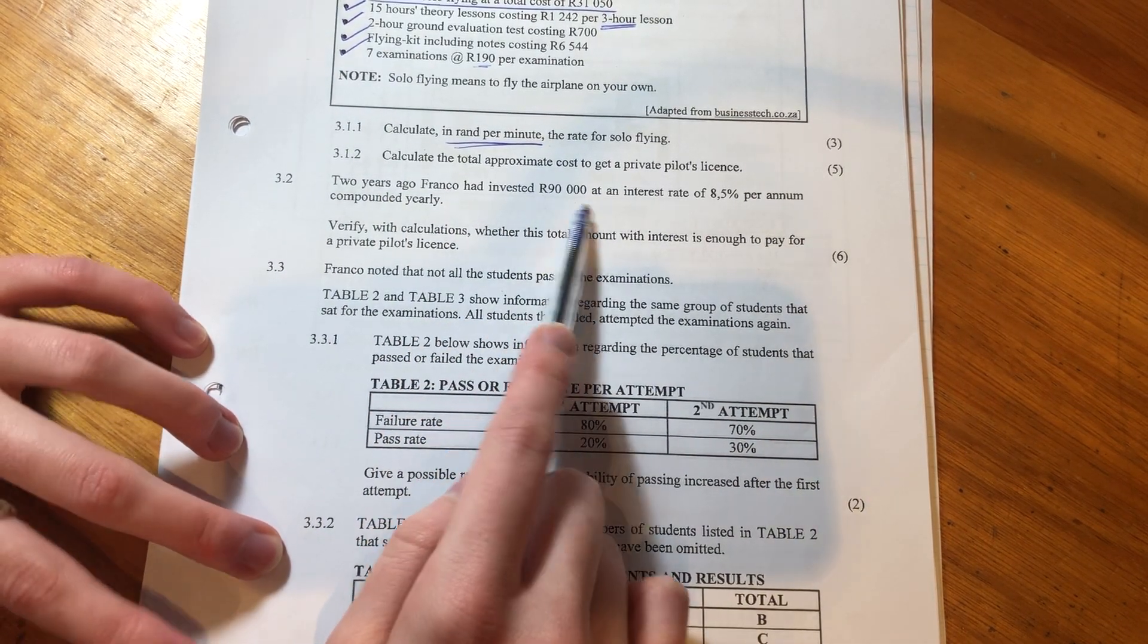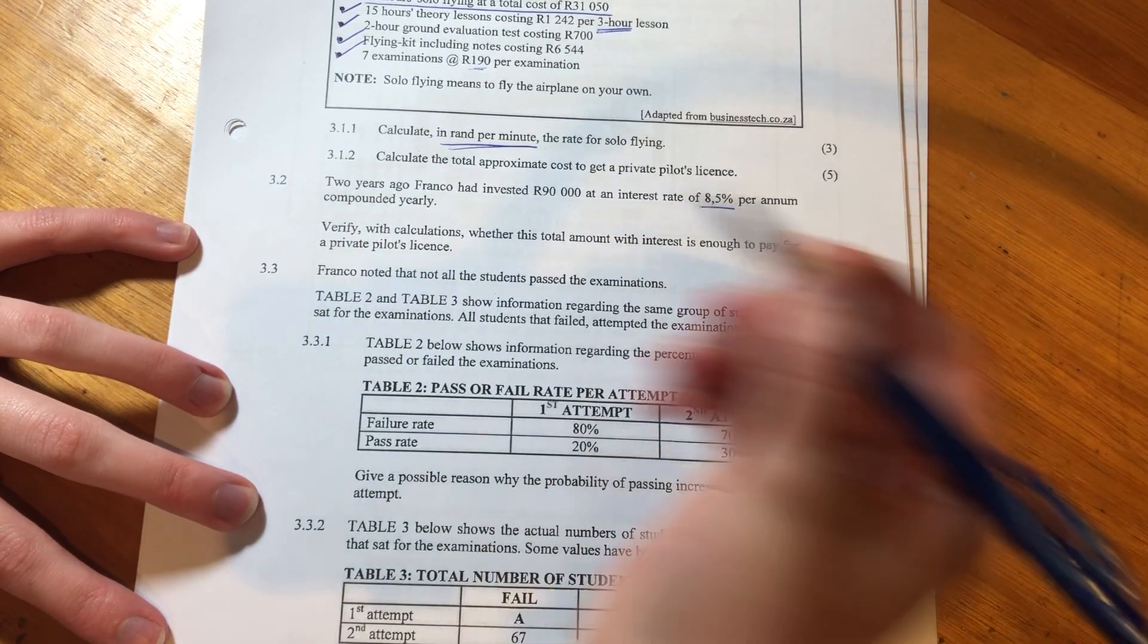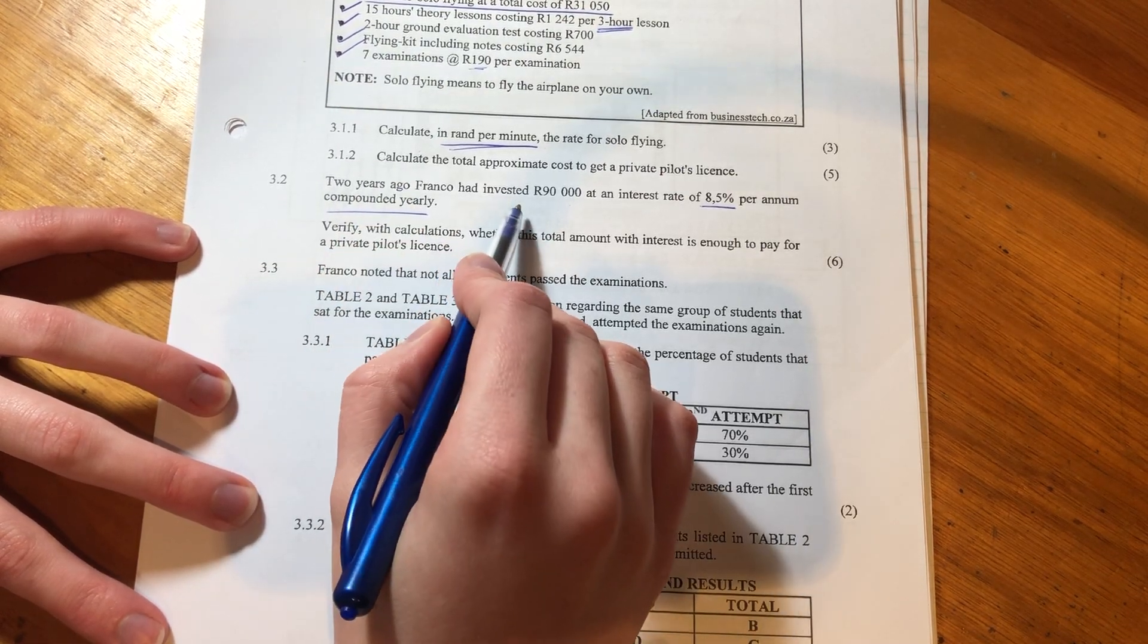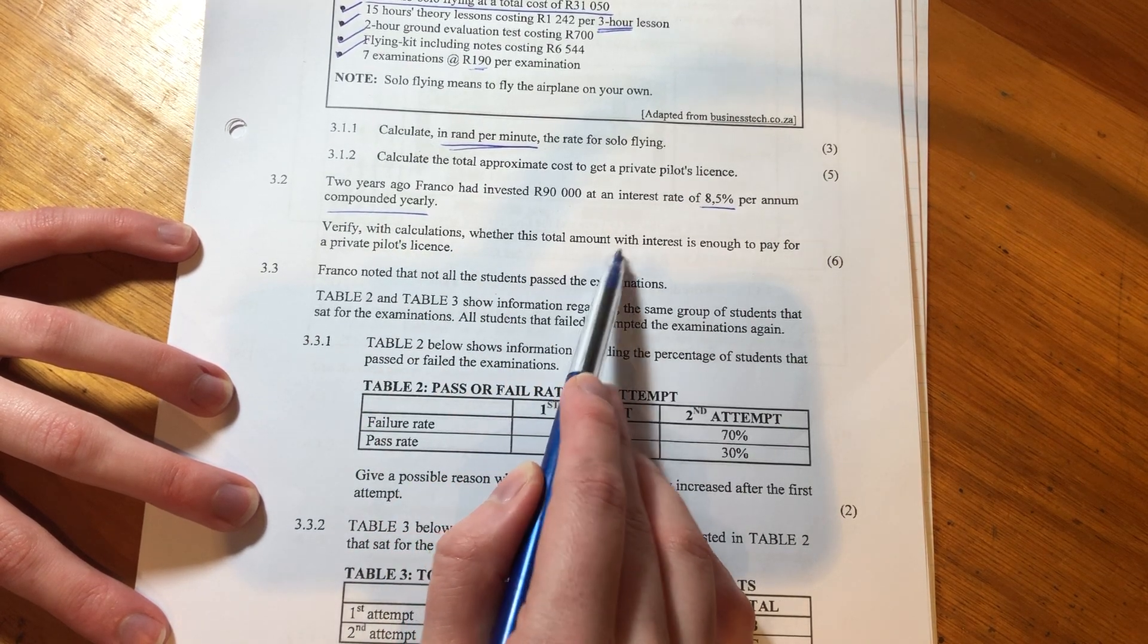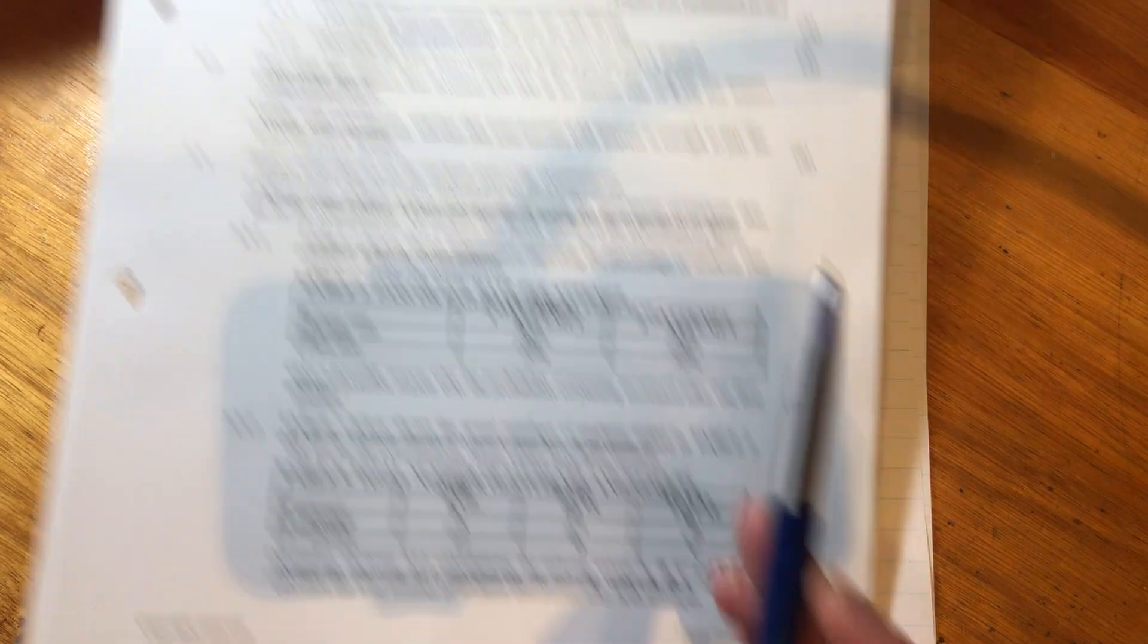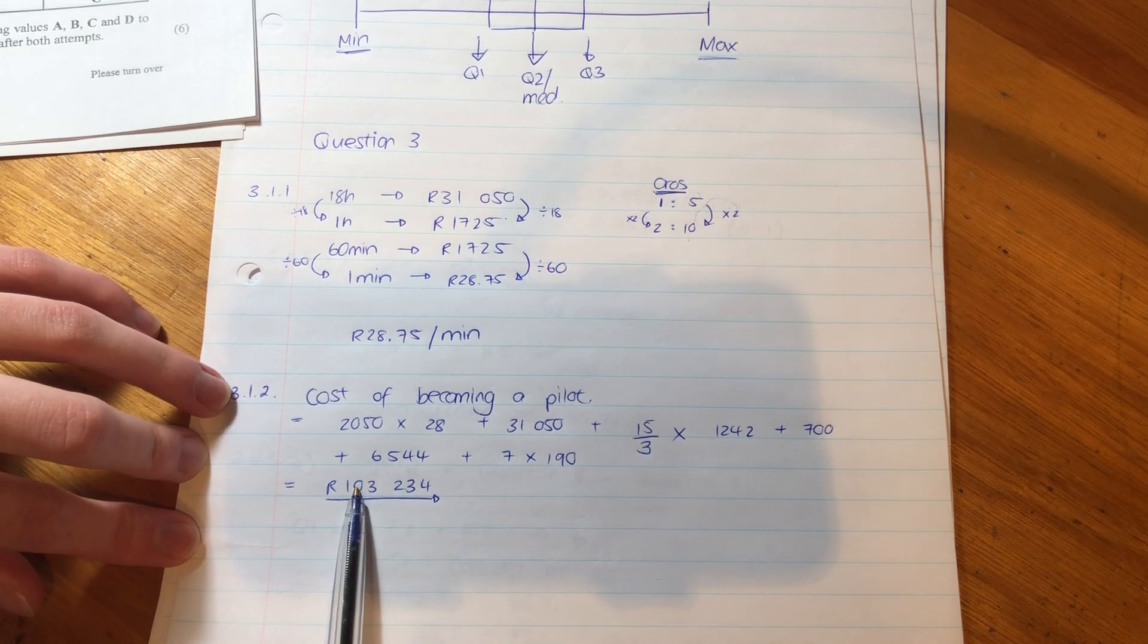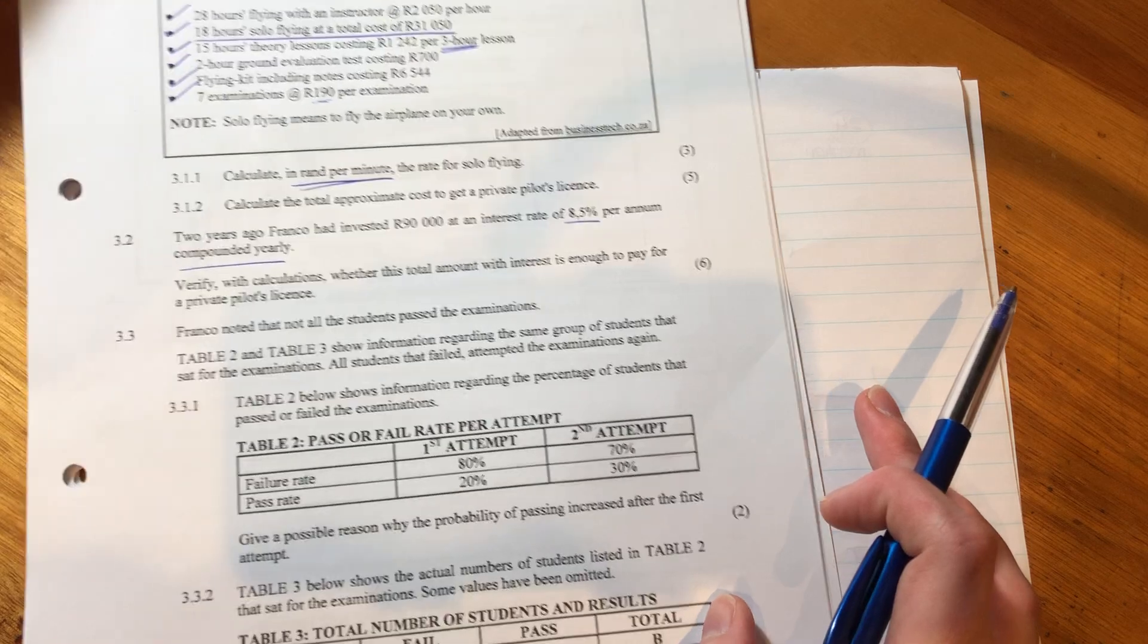So it says, two years ago, Franco had invested 90,000 Rand at an interest rate of 8.5% per annum compounded yearly. That's important. Compounded means we earn interest on interest. So, we found out from our previous video, this is how much it costs for the private pilot license. So, let's just do a little calc on how much he is actually going to have saved up at the end of the two years.